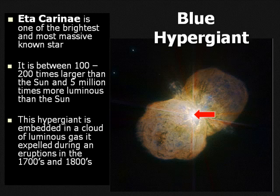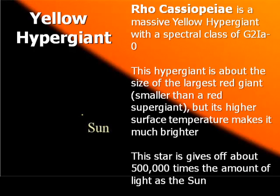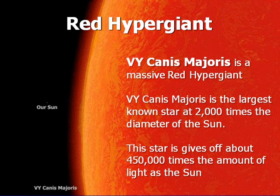Examples of hypergiants include Eta Carinae — a star 100 to 200 times more massive than our own sun. The brightest star known is a blue hypergiant called R136A1, not even in our own galaxy but in the large Magellanic cloud, at the center of a really massive cluster. Rho Cassiopeia is an example of a massive yellow hypergiant. And the largest known star ever studied is called VY Canis Majoris — 2,000 times the diameter of the sun. If placed in our own solar system, it would expand beyond the orbit of Saturn.